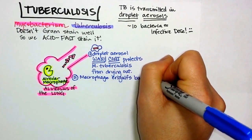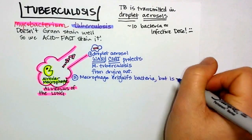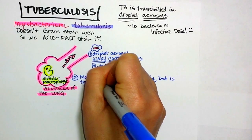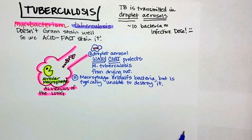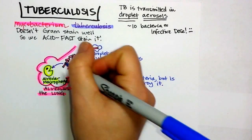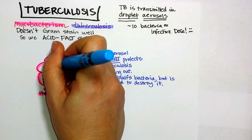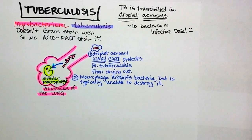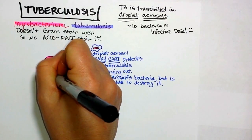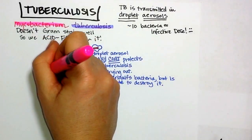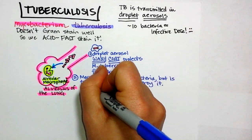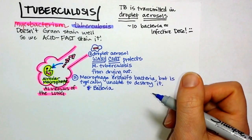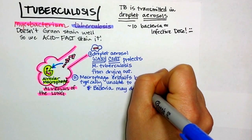The second step is that once the mycobacterium gets into our lungs, it can't be destroyed by our macrophages. The macrophages engulf the mycobacterium, but they're typically unable to destroy it. One thing that can happen is that the bacteria destroys the macrophage, it spreads, it's an active infection, and makes the person very sick.